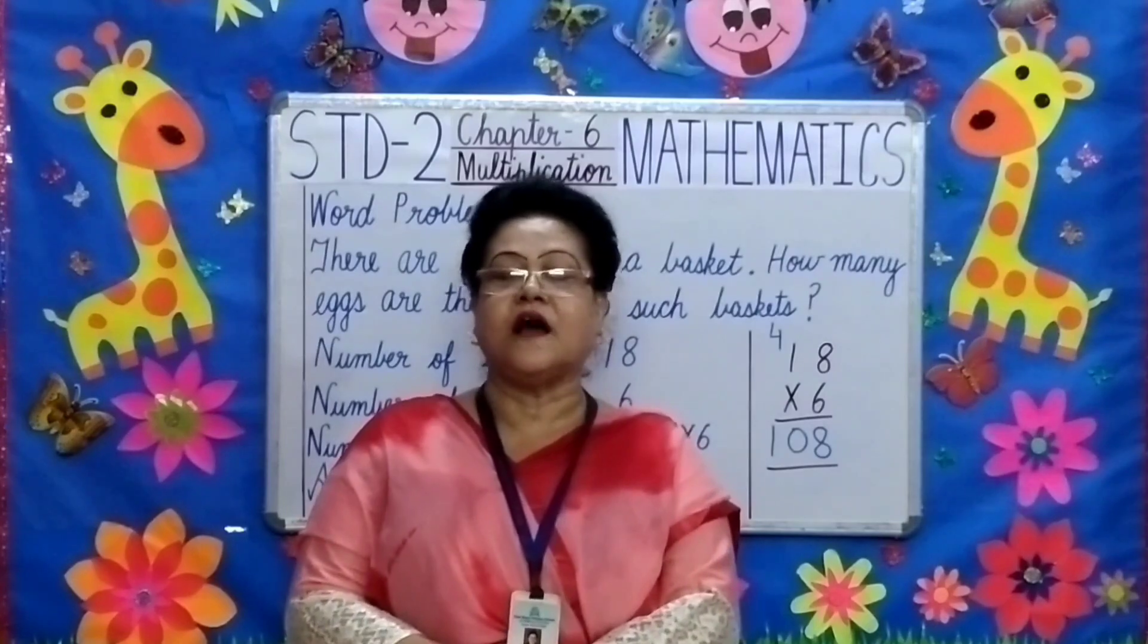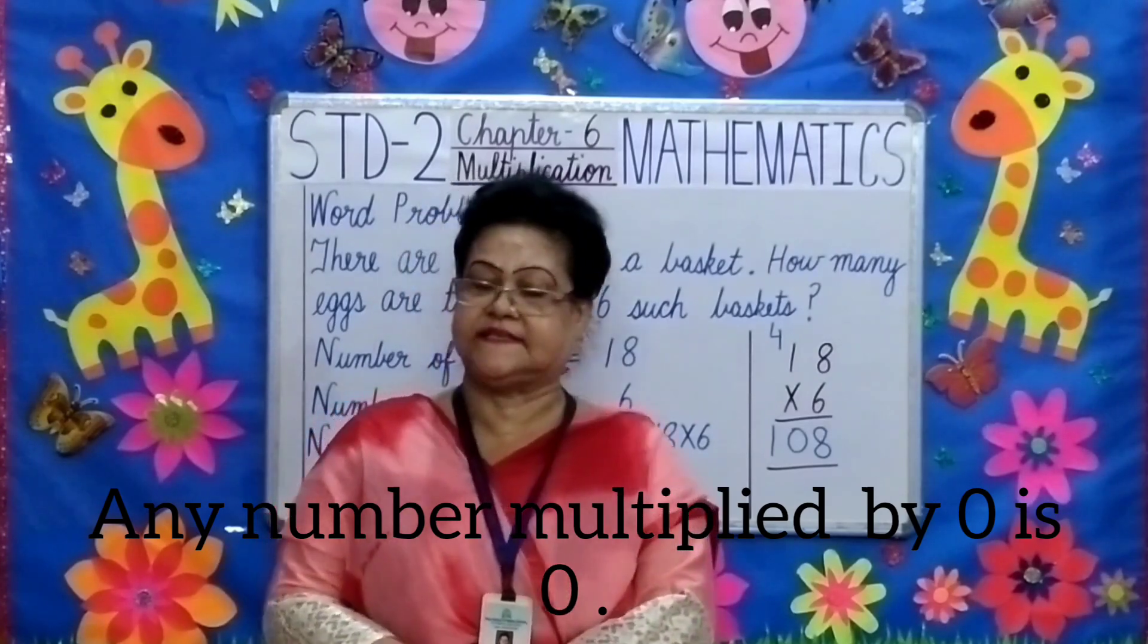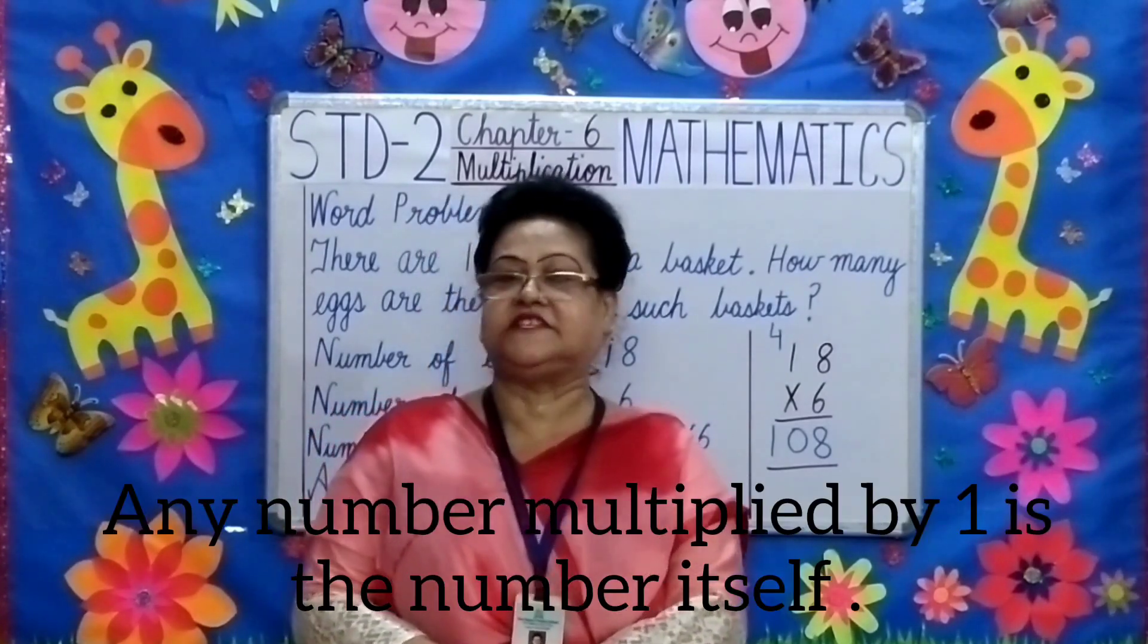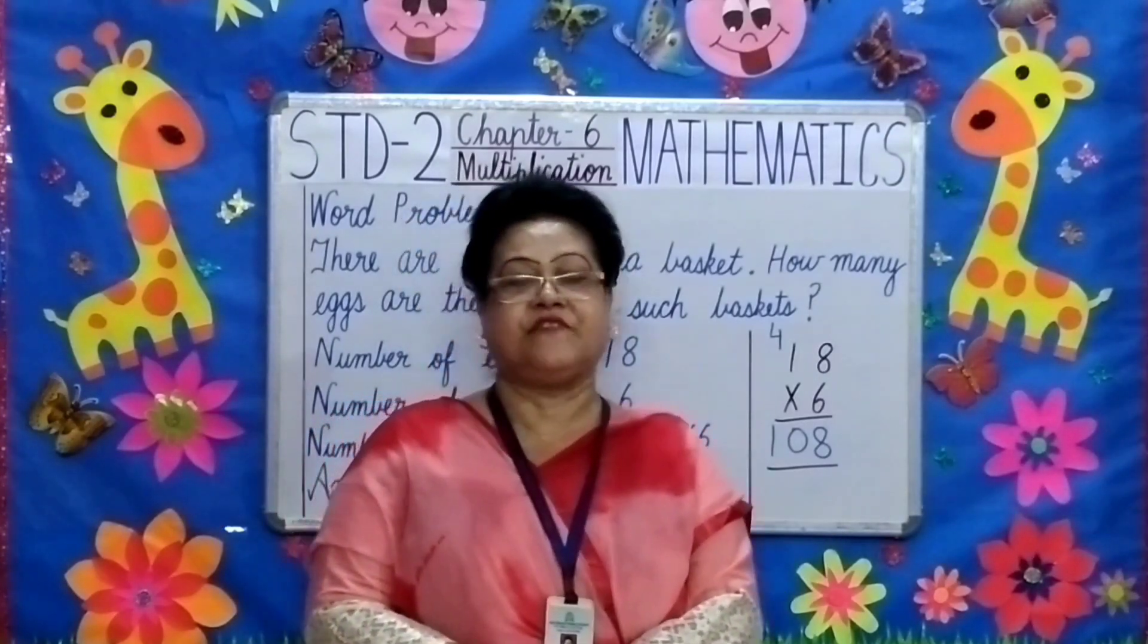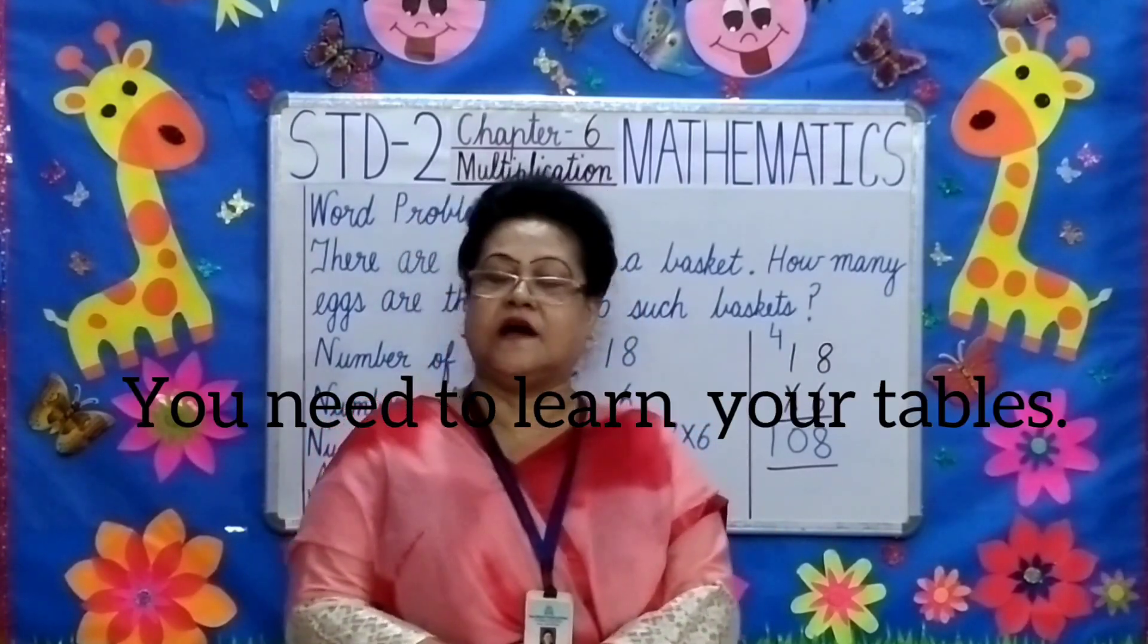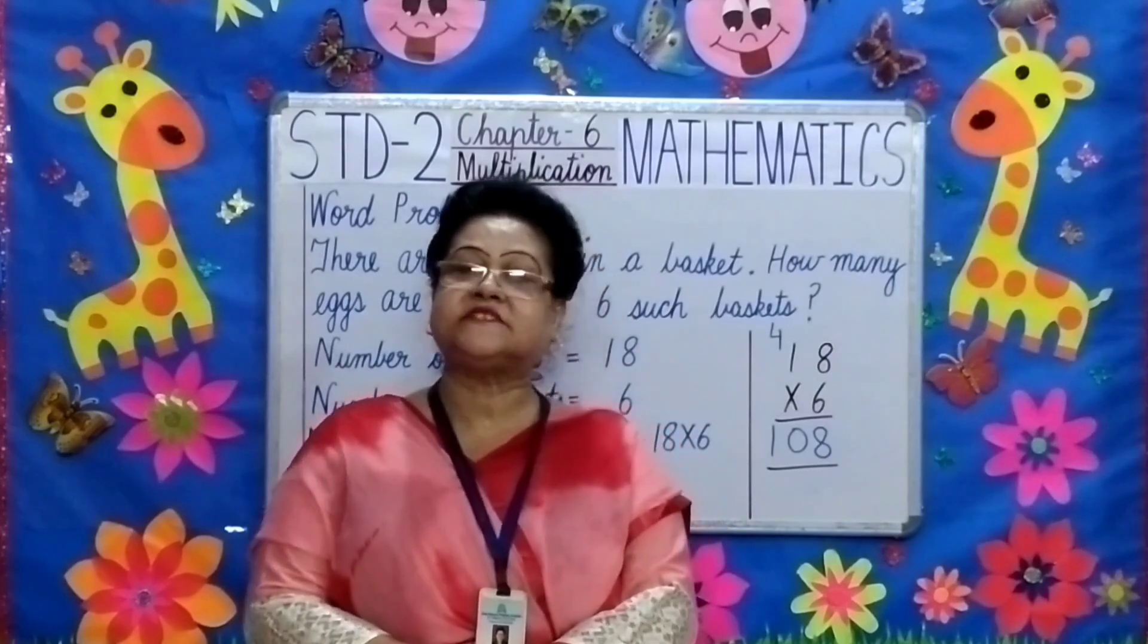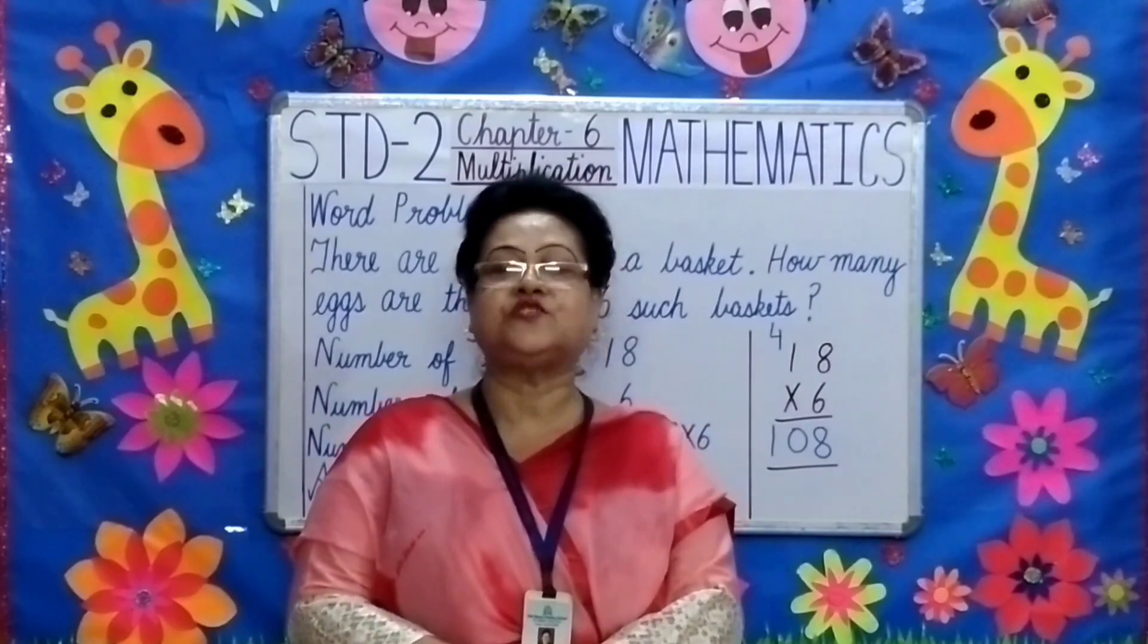Children, a few points to remember. Any number multiplied by 0 is 0. Also 0 multiplied by any number is 0. Any number multiplied by 1 is the number itself. Today children, we learnt everything about multiplication. You need to learn your tables and read the chapter. All the exercises and worksheets based on this chapter will be uploaded on your school website. Thank you children.